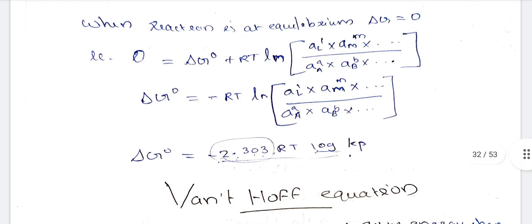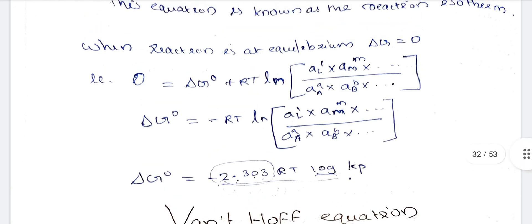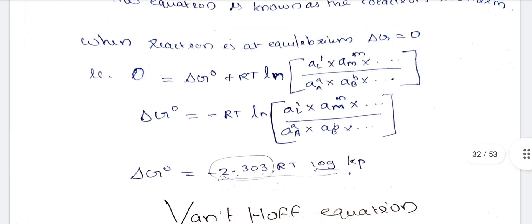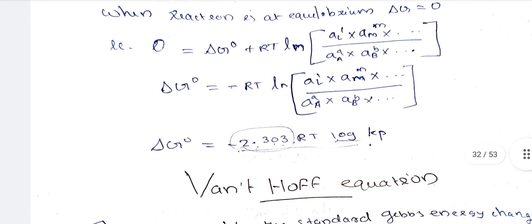This gives us delta G° = -2.303 RT log Kp. We will be familiar with this process from this derivation. We will continue in the next video.